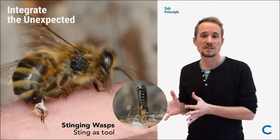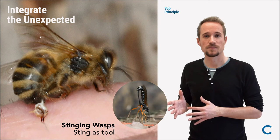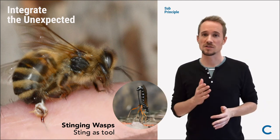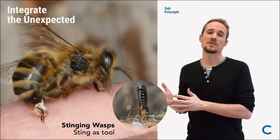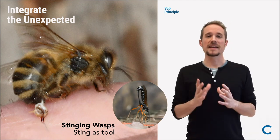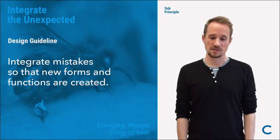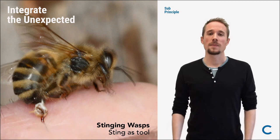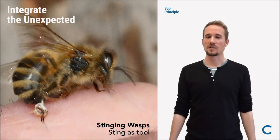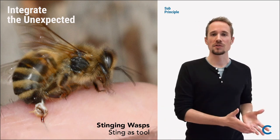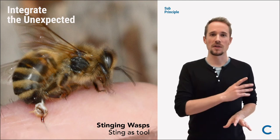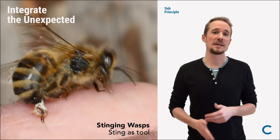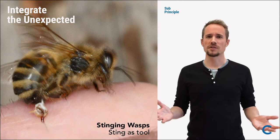Nowadays, bees defend themselves with their sting, wasps attack ants. And that's the reason why only female bees, female ants, and female wasps have a venomous sting — because in their ancestors, those were the body parts that females had for laying eggs. Our design guideline here: integrate mistakes so that new forms and functions are created. Where do we find aculeata in our ecosystem of a tree? They're everywhere and extremely important. Ants are extremely important for everything happening in the topsoil; they crawl around in cooperation with aphids. They're important nourishment for birds. Bees are important for pollination. Wasps are important predators.